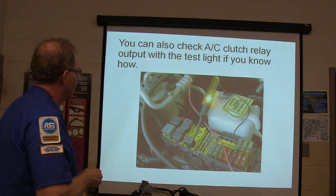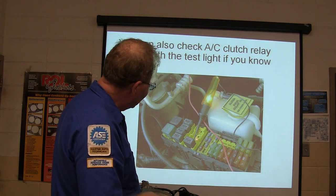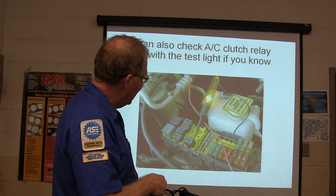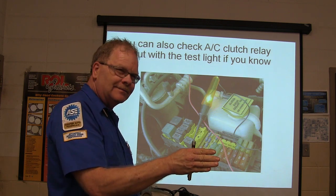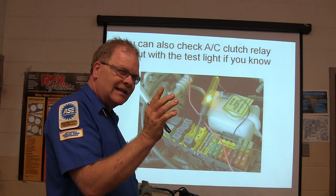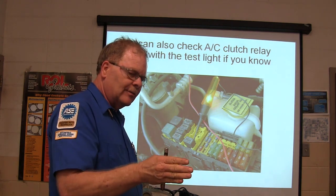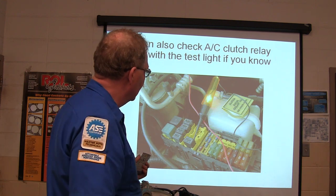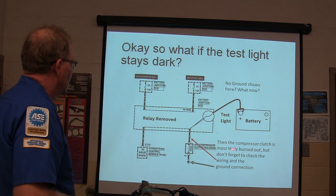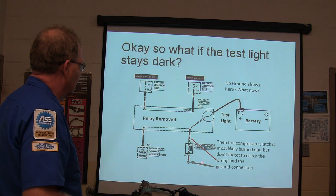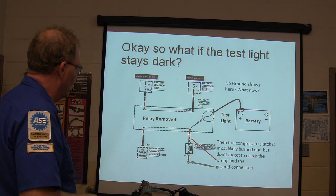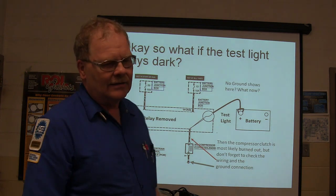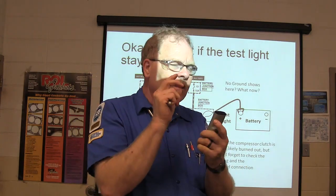You can check the AC clutch relay output with a test light by going underneath the relay socket and watching the light click on and off. If I see the light turning on but the compressor clutch hasn't pulled in, the air gap may be too wide — especially if it's been running for a while and gets warm. If the compressor won't pull in, you need to adjust the air gap on your compressor.